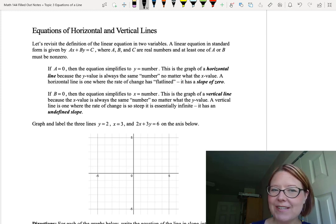We'll start by revisiting the definition of a linear equation in two variables. A linear equation in standard form is given by ax plus by equals c, where a, b, and c are just real numbers.